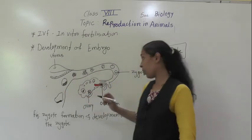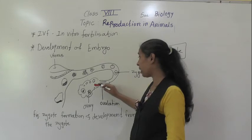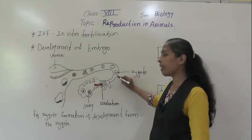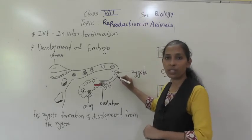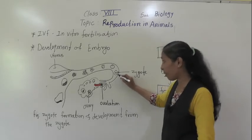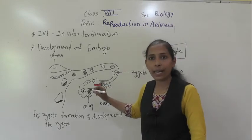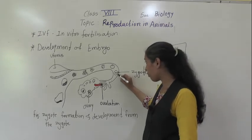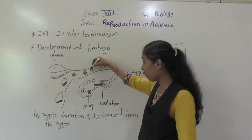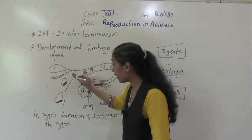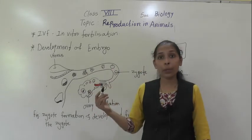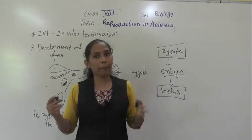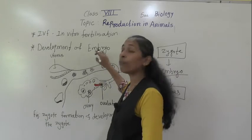Now let's go through the diagram. Once the egg matures it gets released from the ovaries and comes into the oviduct, where the fertilization process happens — the fusion of eggs and sperm occurs in the oviduct. After fertilization, the zygote is formed and starts to divide repeatedly, forming a number of cells. These cells form the embryo, which gets embedded into the uterus where the different body parts develop. This is the development of the embryo.